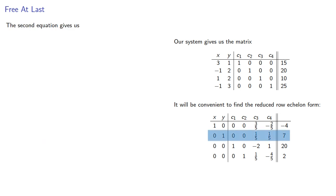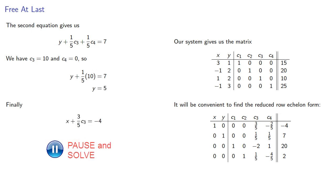The second equation gives us, and our values of c3 and c4 we get, and finally, and so negative 10, 5 is another vertex.